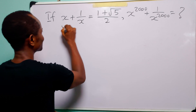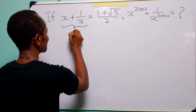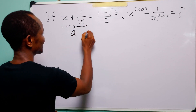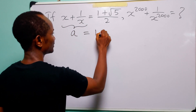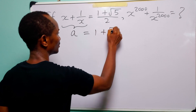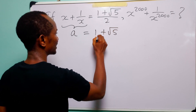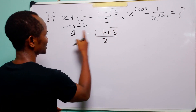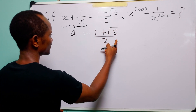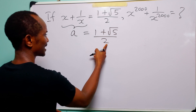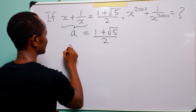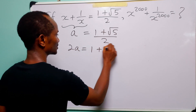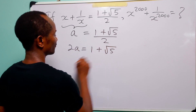To solve this problem, let us call this quantity A. Now we have that A is equal to 1 plus root 5 divided by 2. Multiplying both sides of this equation by 2, we have that 2A is equal to 1 plus root 5.